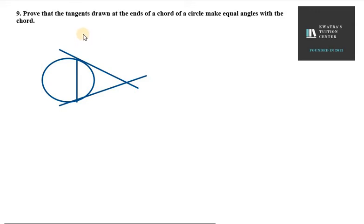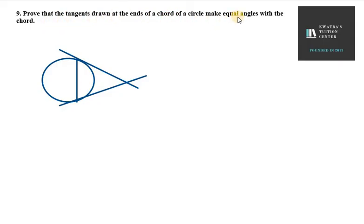Hello everyone, let's start with question number 9 of exercise 9.3. It says: prove that the tangents drawn at the ends of a chord of a circle make equal angles with the chord.